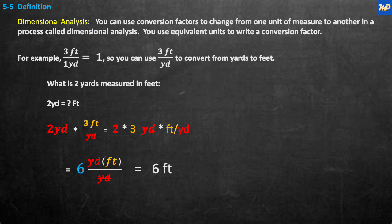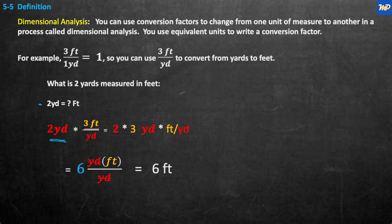This means you can multiply any equation you're trying to solve by one and not change the outcome or the answer. You can use three feet per yard to convert from yards to feet. So, what is two yards measured in feet? We're going to start off with two yards and multiply by three feet per one yard. When we do so, the yards are going to cancel, and we're going to multiply two times three.